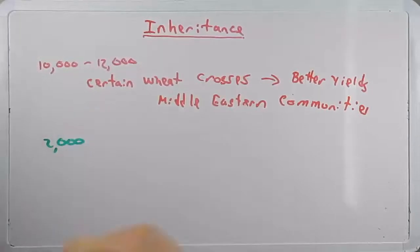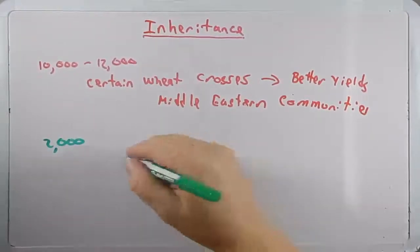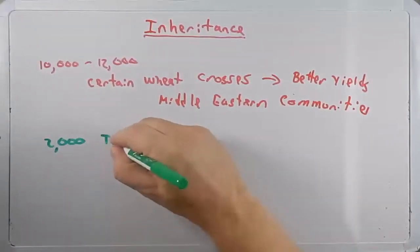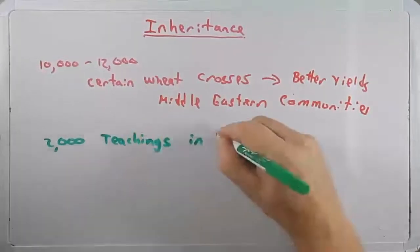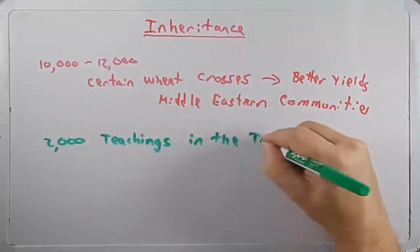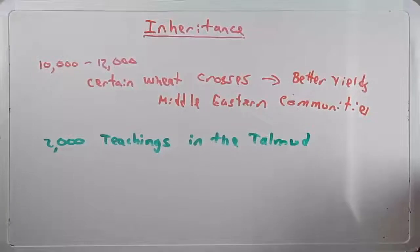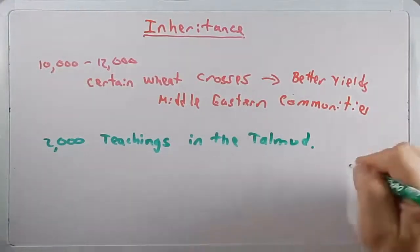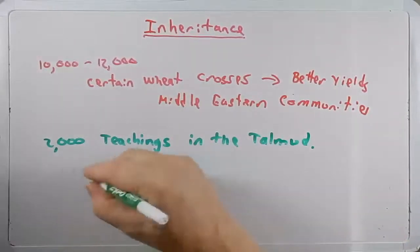Another piece of interesting information is we know 2,000 years ago, roughly, that teachings in the Talmud, which is the holy book of Jewish rules and traditions. In this book, there is a teaching that says if two sons die due to bleeding,